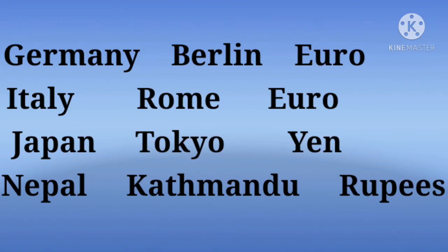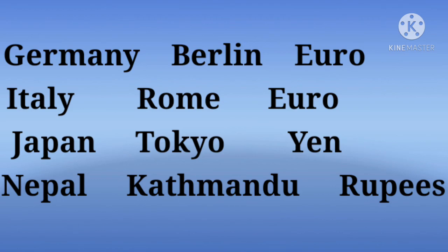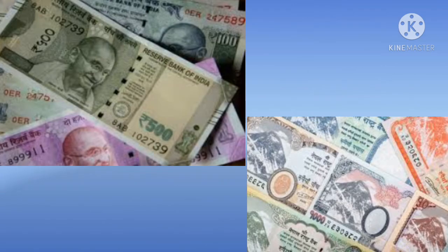Next country is Japan. Its capital is Tokyo and currency is Yen. Here is a picture of Yen. Next is Nepal. Its capital is Kathmandu and currency is Rupees — Nepalese Rupees. There is a difference between Nepalese Rupees and Indian Rupees.